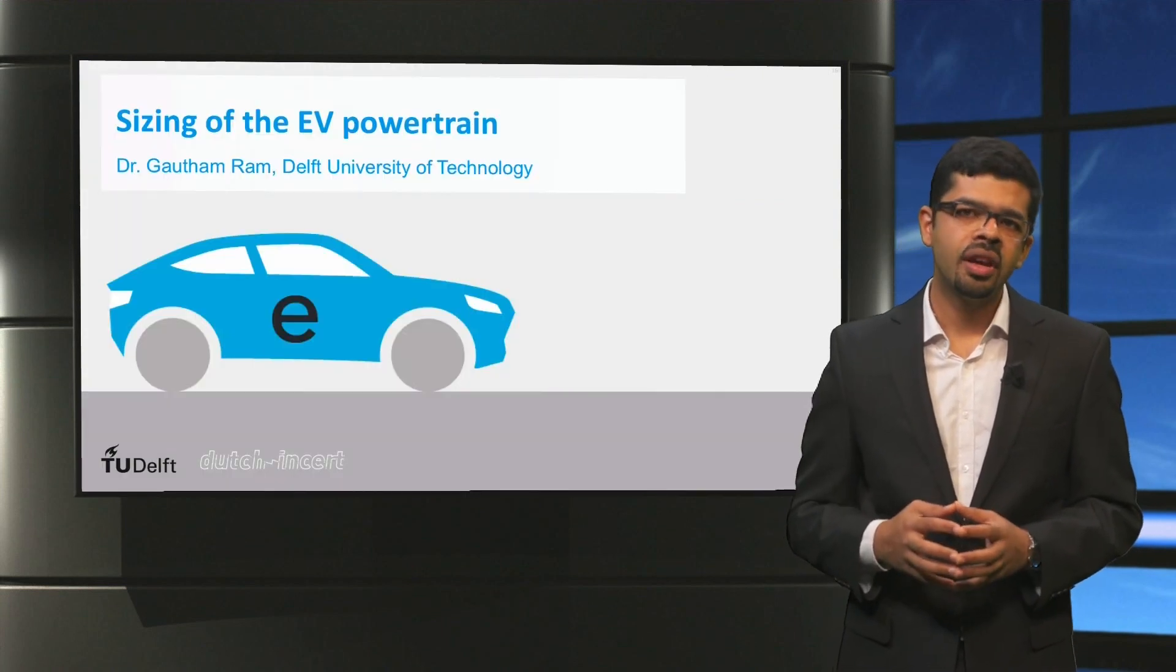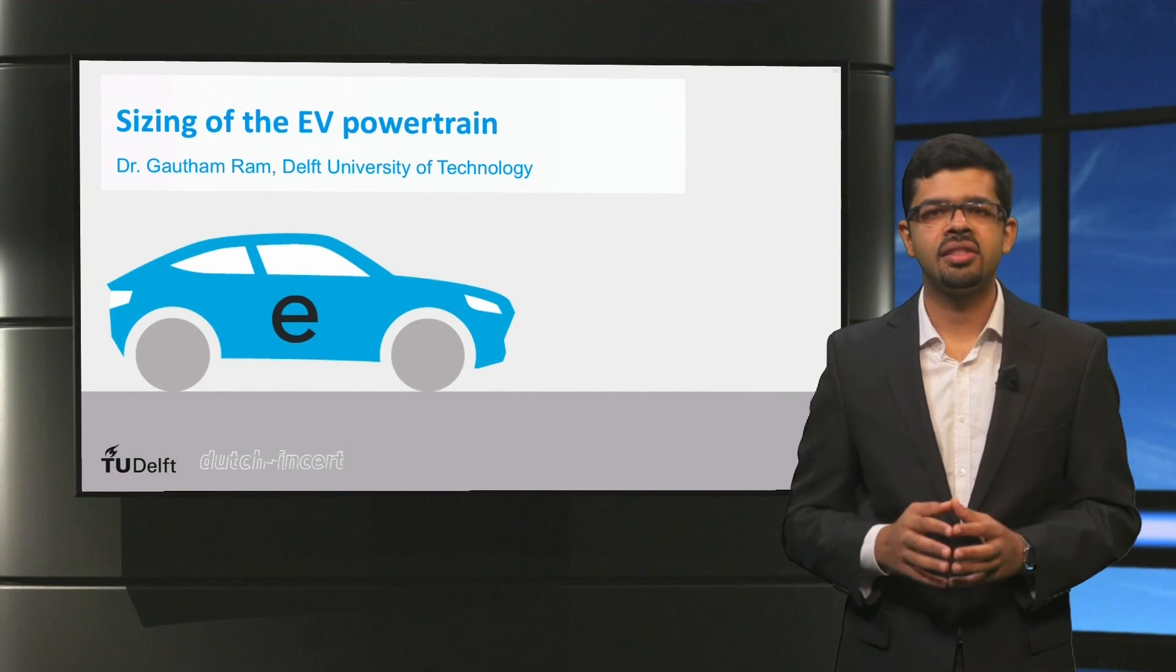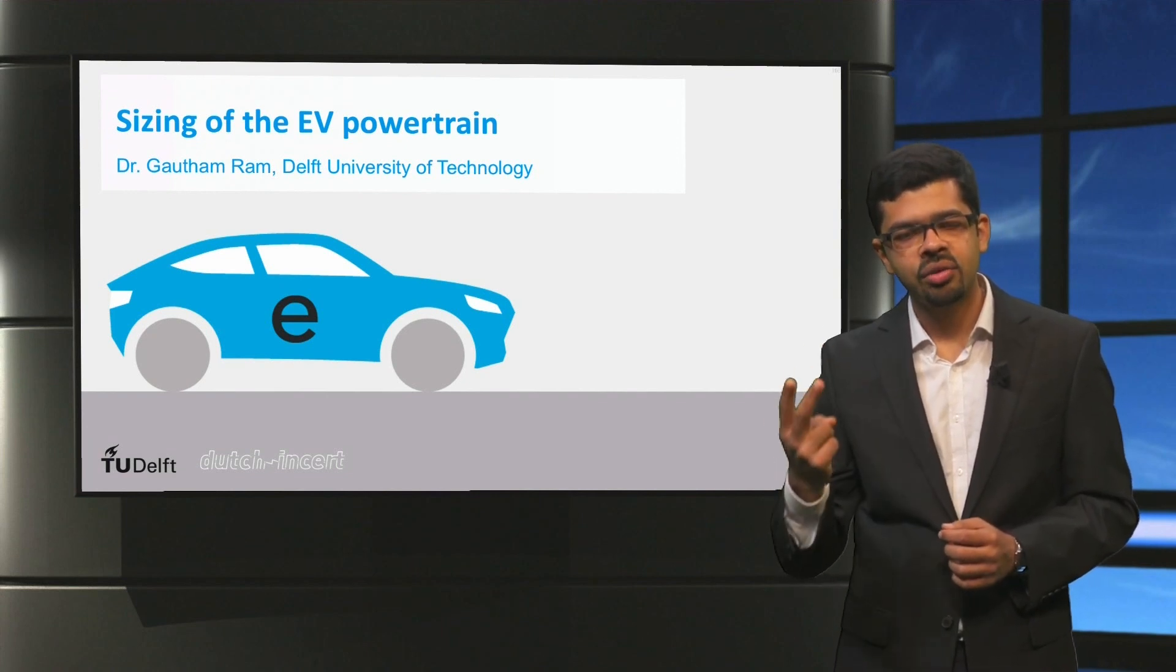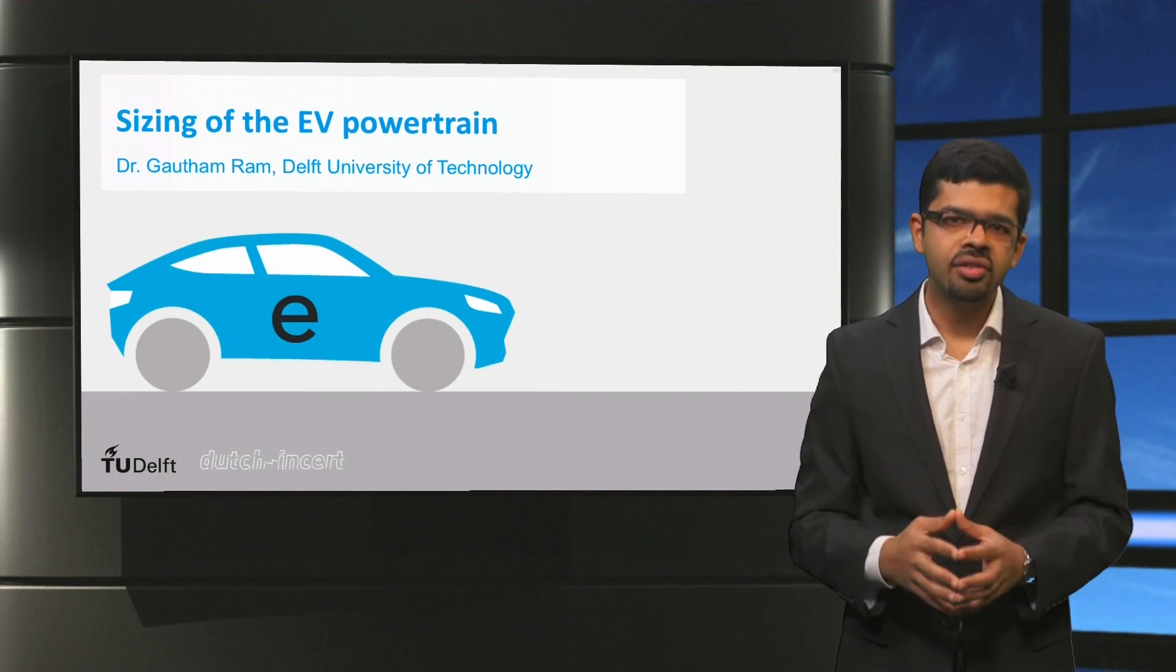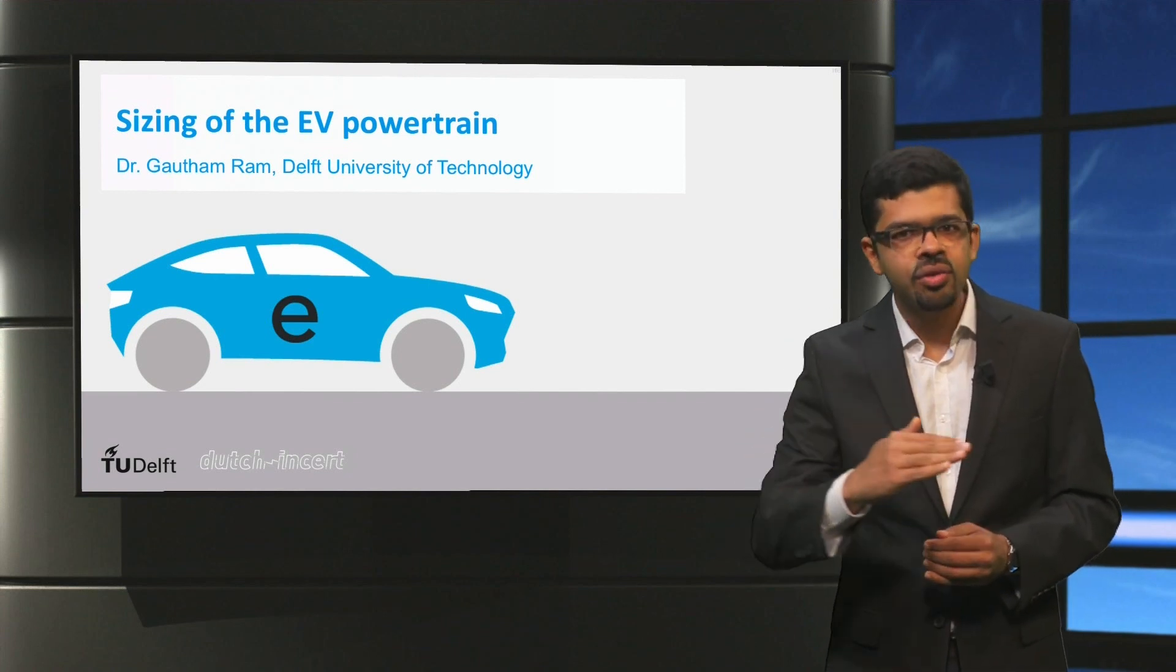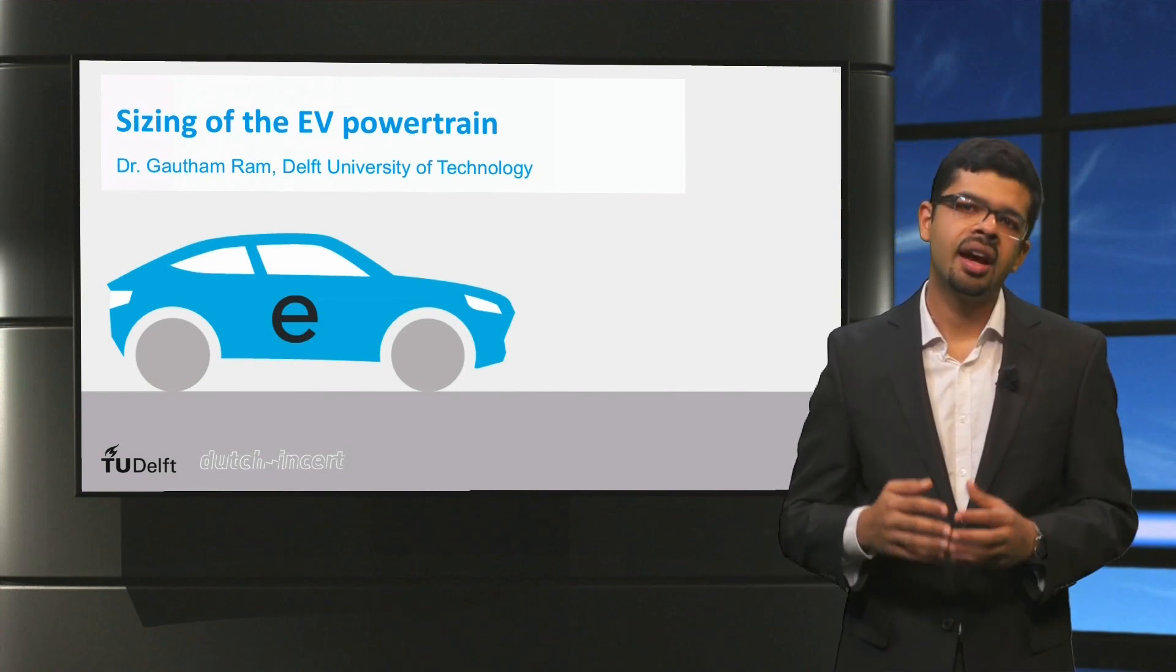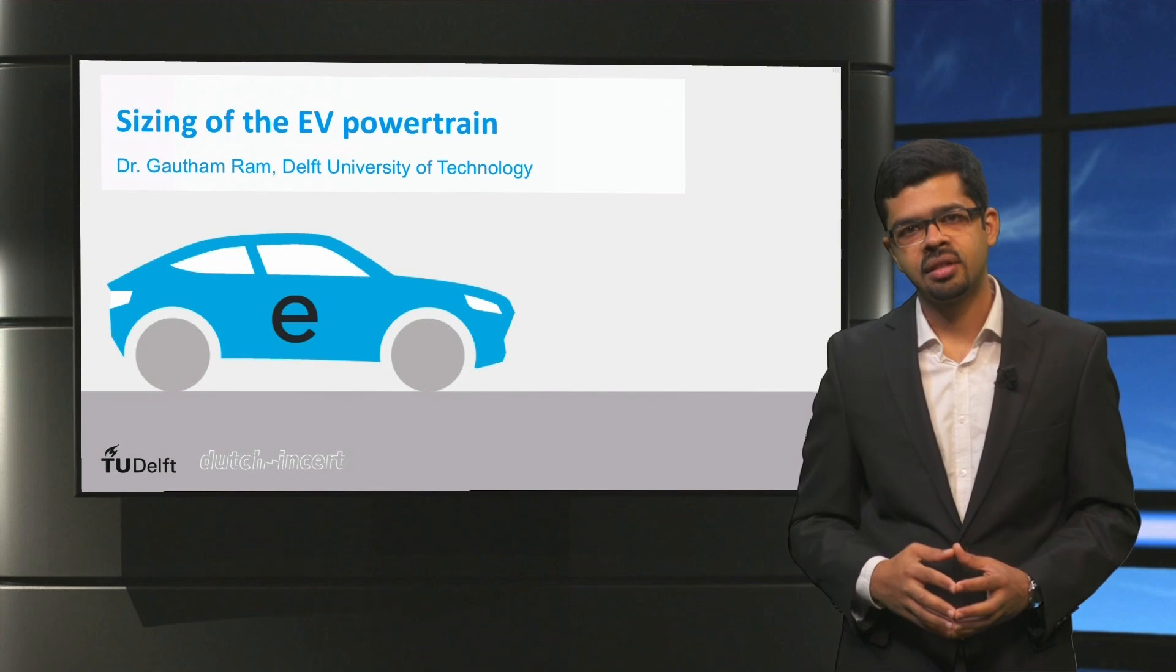To conclude, the forces acting on a vehicle when driving consists of the rolling resistance force, the aerodynamic drag force and the gradient force. The drivetrain provides the traction force which can be controlled to change the vehicle acceleration and hence the vehicle speed. Thank you.